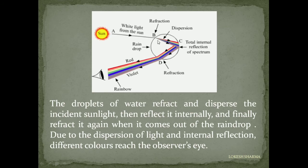The light enters a tiny droplet and at point B, refraction occurs and light gets split into its seven colors. At point C, total internal reflection occurs. And at point D, refraction occurs again when light comes out of the water droplet. Different colors then reach the observer's eye and they see a beautiful rainbow.